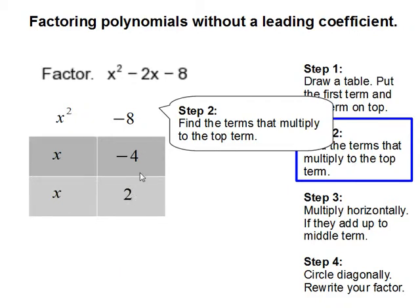Then 2 times negative 4, that gets you negative 8. Now we can try other numbers as well, such as negative 8 times 1, or negative 2 times 4. But we're going to start off by using negative 4 and 2.